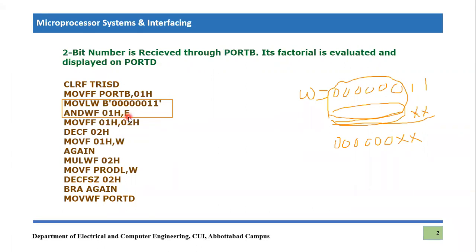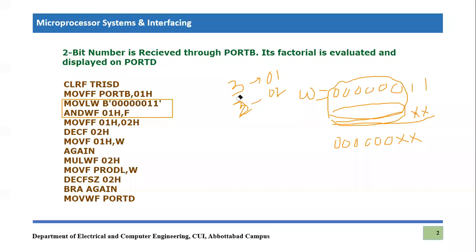Then what we do is copy 01h into 02h, so now we have two copies of the value. One value is present in 01h and another copy is present in 02h. Then we decrement 02h. So let's say if we have received the number three from Port B — it is present in 01h and its copy is in 02h — after decrementing 02h it will become equal to two.